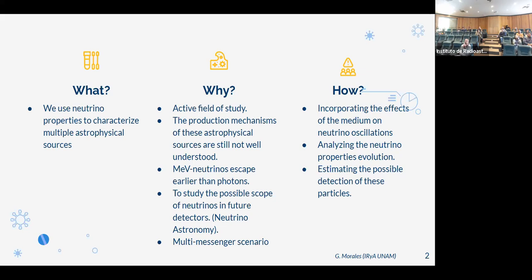Los mecanismos de producción de fuentes de altas energías todavía no están muy bien entendidos. Los neutrinos podrían ayudar a proveer información adicional acerca de este tipo de fuentes. Adicionalmente, los neutrinos tienen una sección eficaz más pequeña y entonces escapan incluso en fases más tempranas que los fotones. También usamos este estudio para explorar el posible alcance en futuros telescopios de neutrinos, y es un importante canal de detección dentro del escenario multi-mensajero. Incorporaremos los efectos del medio en las oscilaciones de neutrinos y estimaremos la posible detección en estos telescopios.